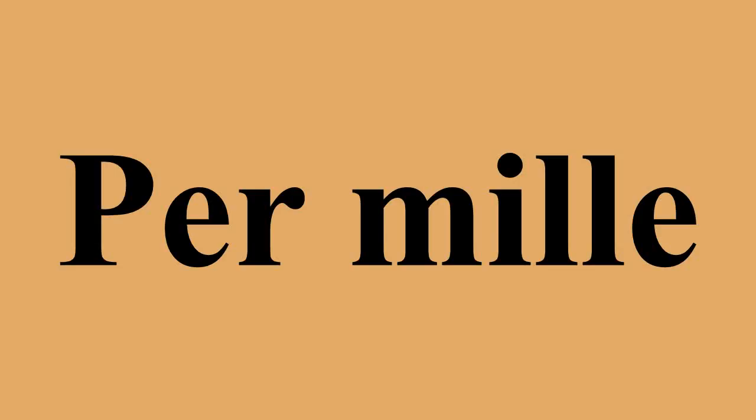Per mil should not be confused with parts per million. The sign is written ‰, which looks like a percent sign with an extra zero in the divisor. It is included in the general punctuation block of Unicode characters, U+2030. It is accessible in Windows using Alt+0137.